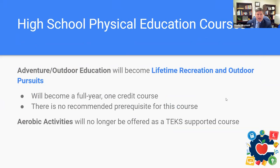The Venture Outdoor Education course is now titled Lifetime Recreation and Outdoor Pursuits — also a full-year, one-credit course with no recommended prerequisites. The biggest change is that aerobic activities, which we've offered for many years, will no longer be offered as a TEKS-supported course.